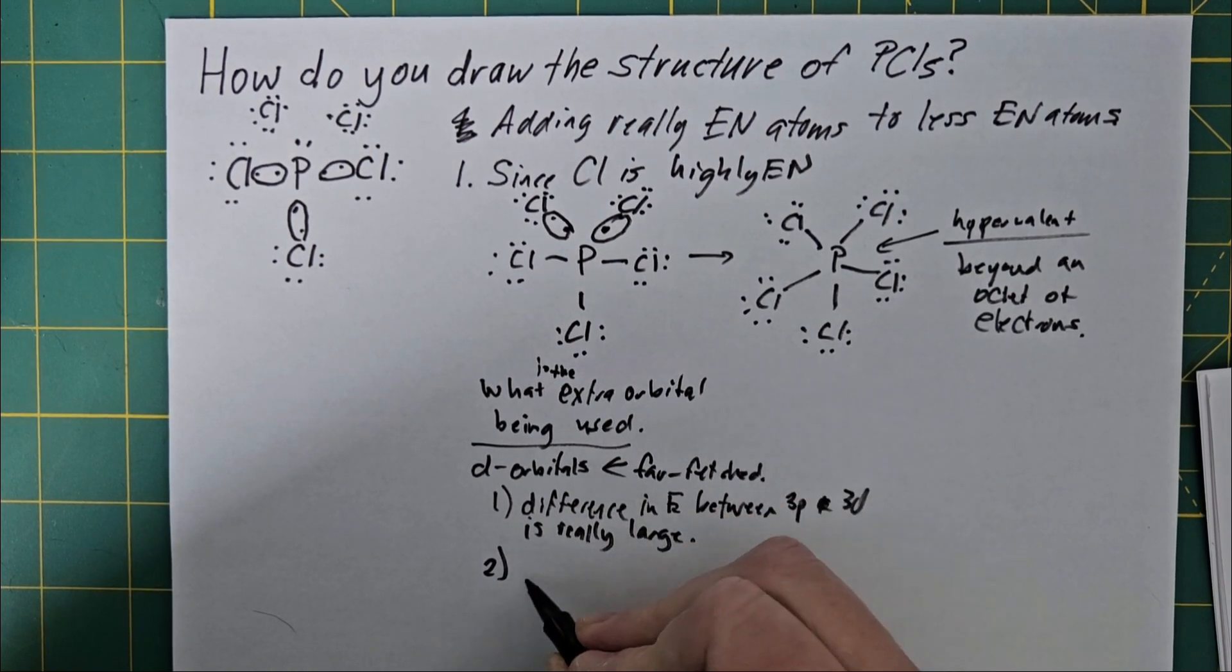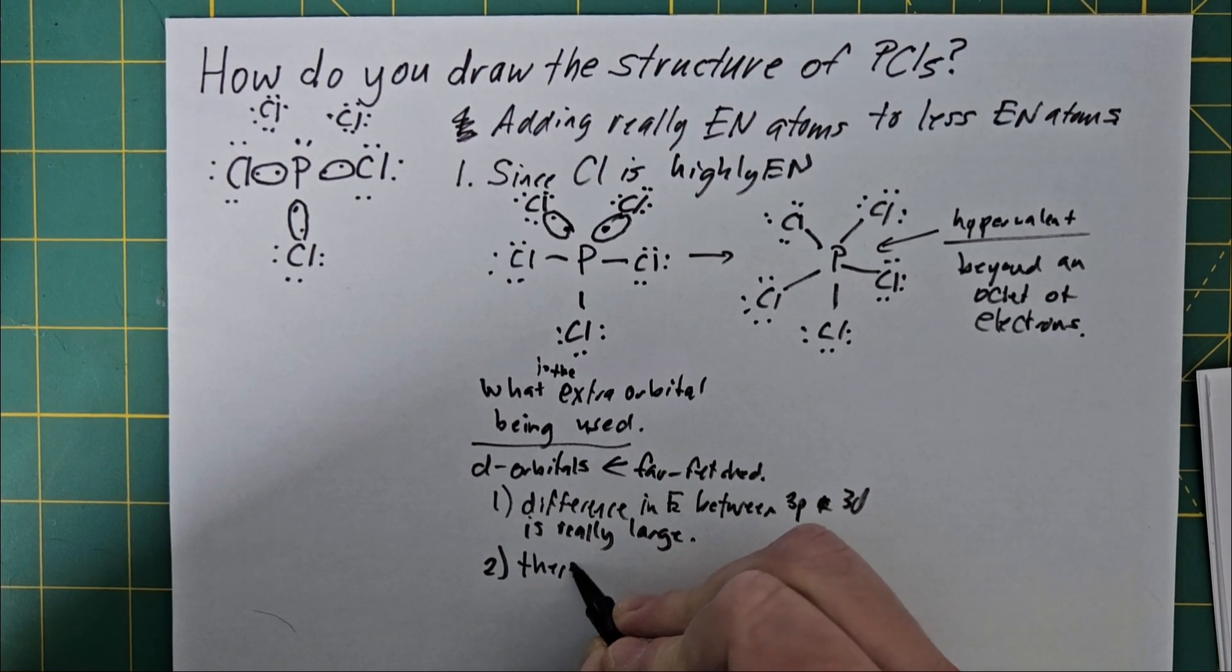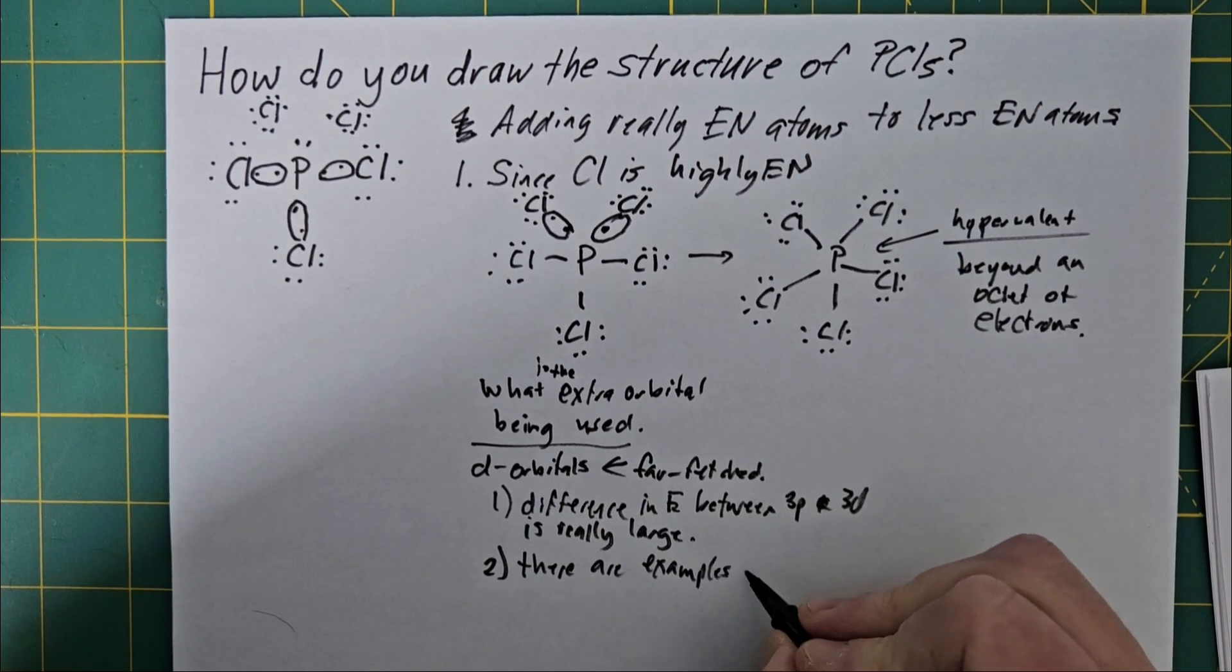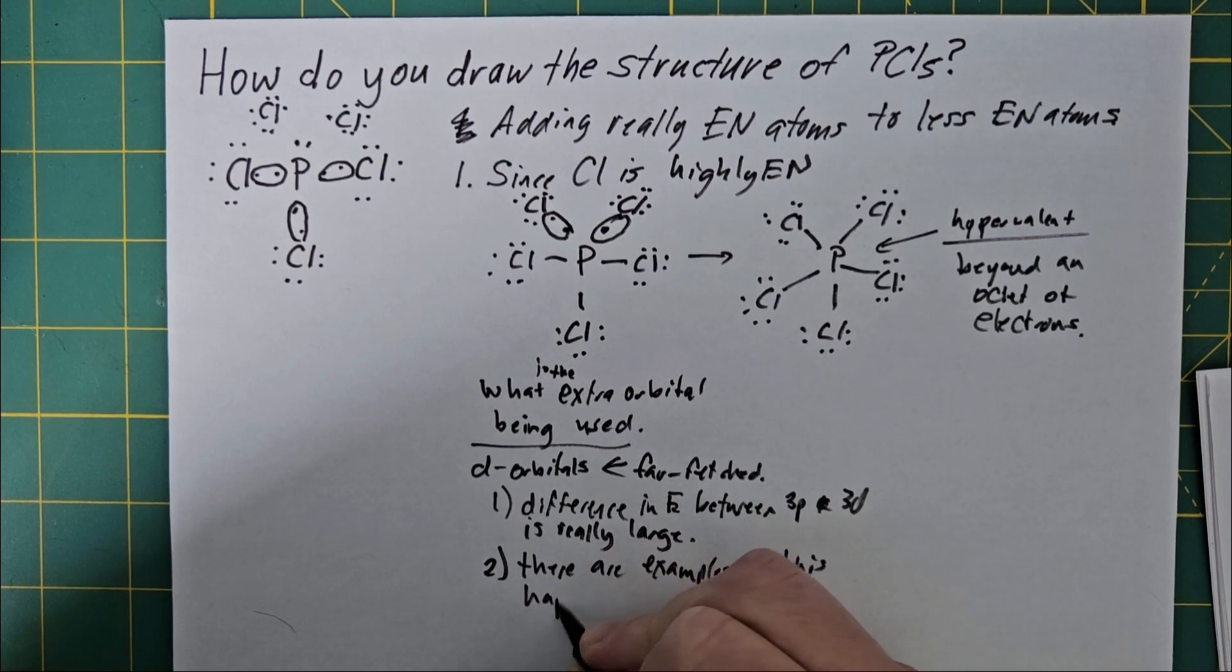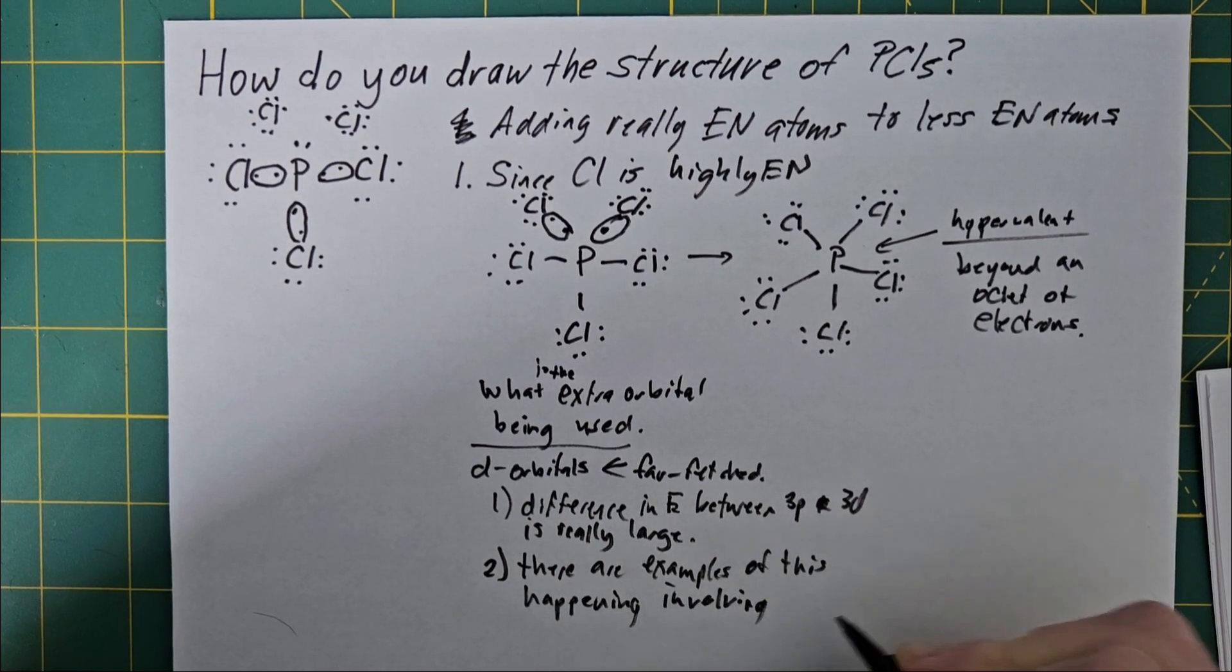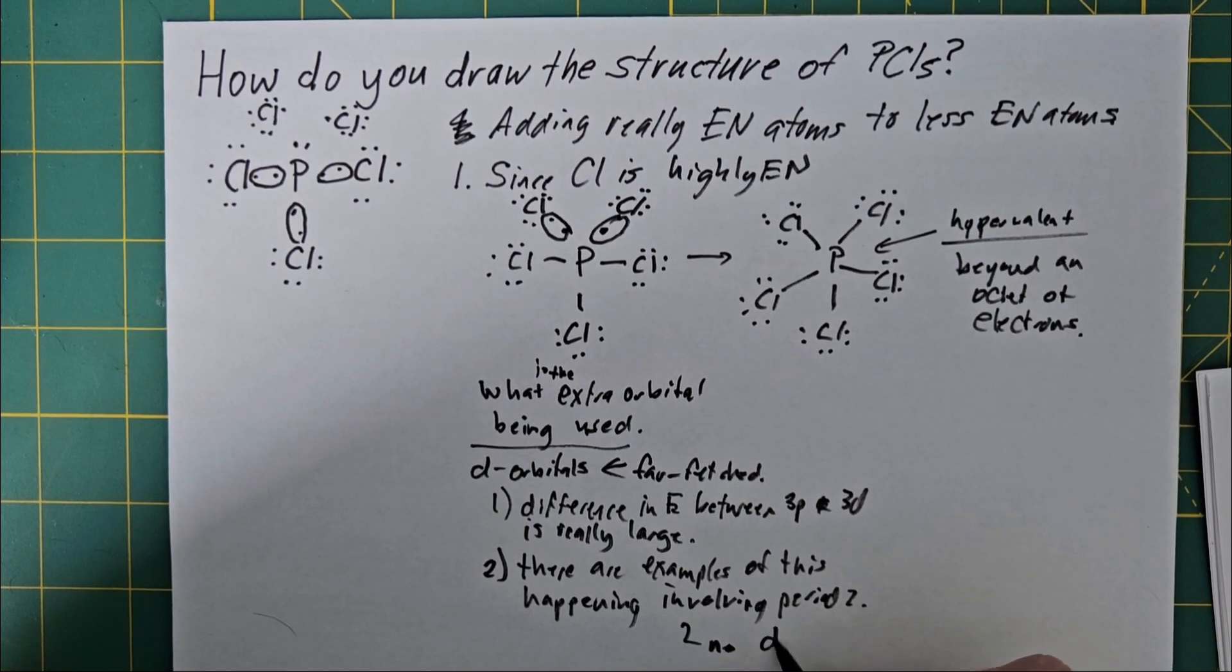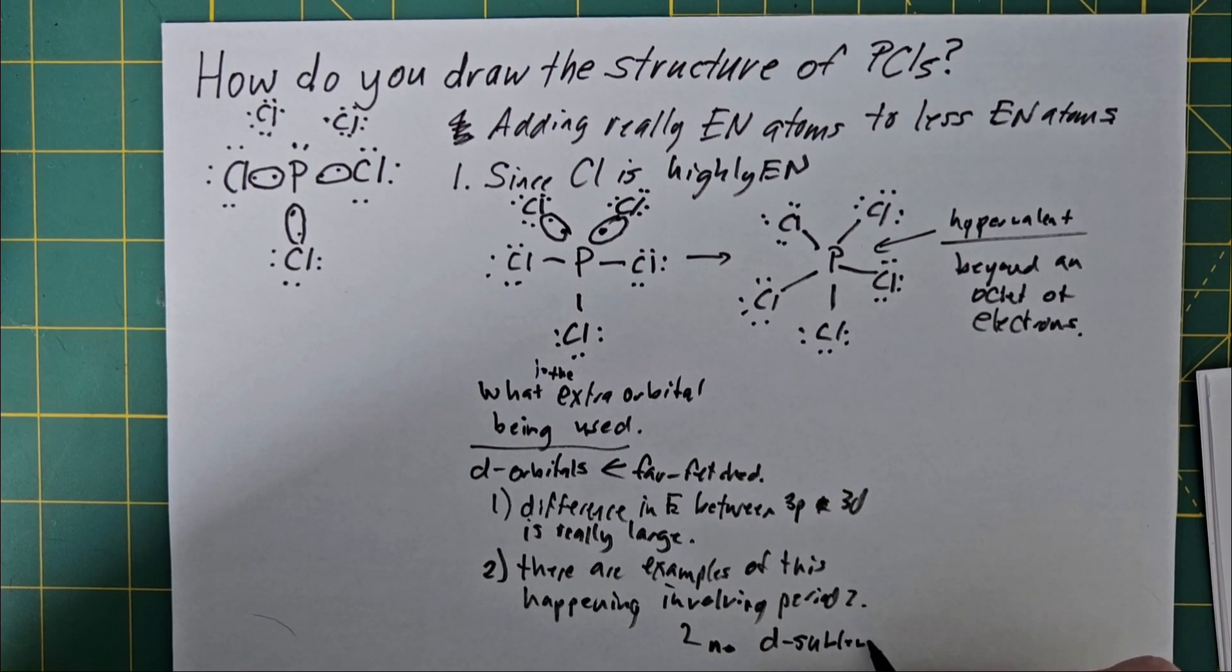And the second is there are examples of this happening involving second period elements. Now, the reason why that is a problem is if you're on the second period, there are no d sub-levels available on the second period.